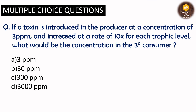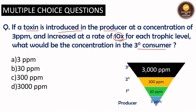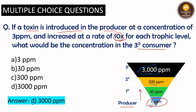Next question: if a toxin is introduced in the producer at a concentration of 3 parts per million and increases at a rate of 10 times per trophic level, what is the concentration in the tertiary consumer? At the producer level: 3 ppm. Primary consumer: 10 × 3 = 30 ppm. Secondary consumer: 10 × 30 = 300 ppm. Tertiary consumer: 10 × 300 = 3000 ppm. The answer is option D — 3000 parts per million.